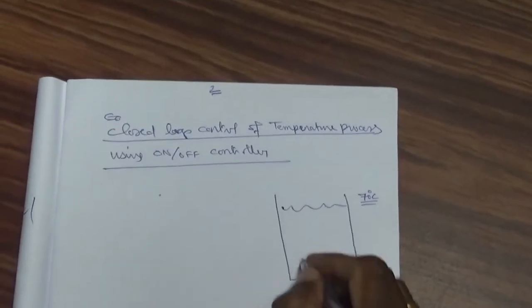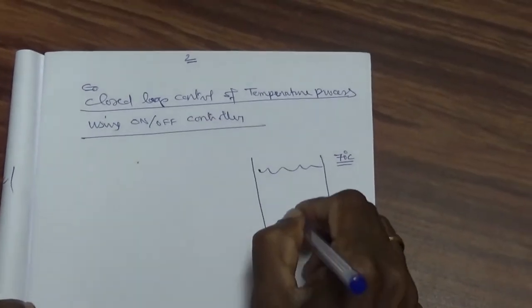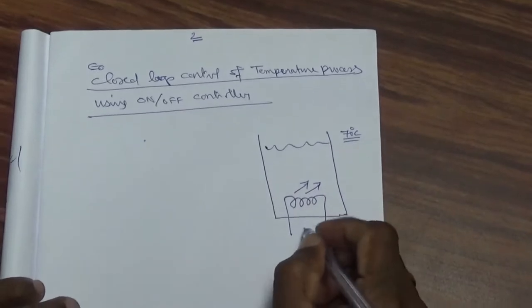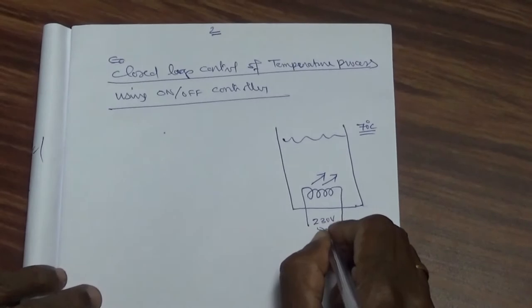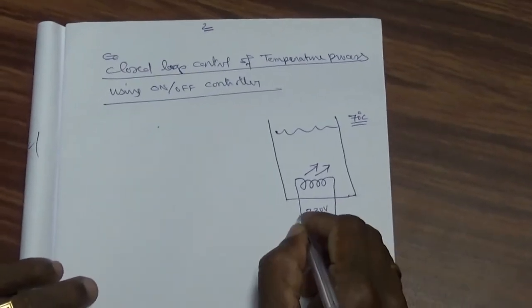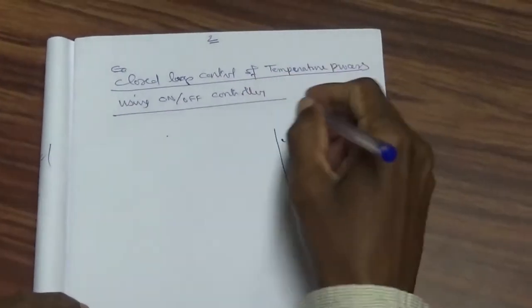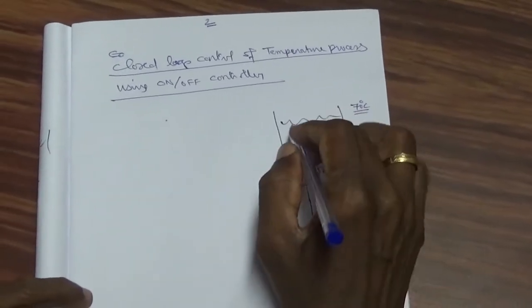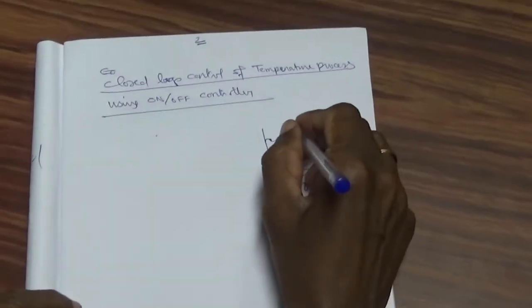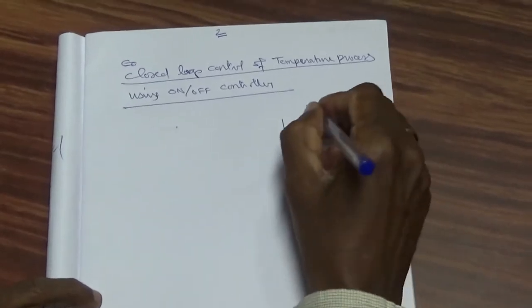Initially the water bath will be at room temperature. We will use a heater to raise the temperature to 70 degrees centigrade. The heater works on 230 volt, 50 hertz single-phase power supply. So we need a transmitter to measure the temperature of this water bath, and for that we will use a temperature RTD placed inside the water bath.